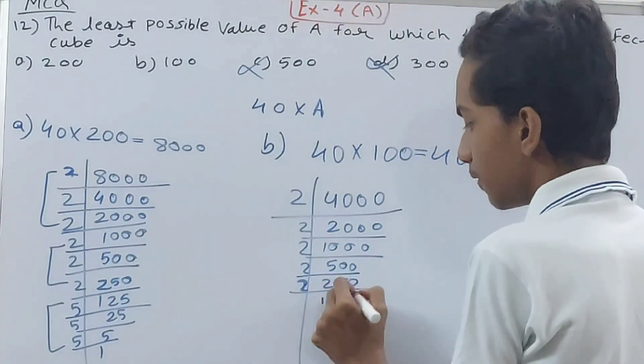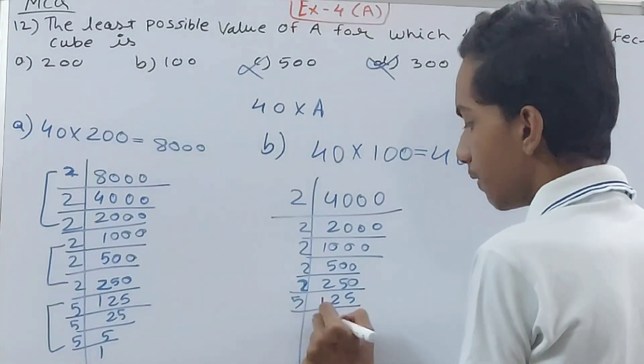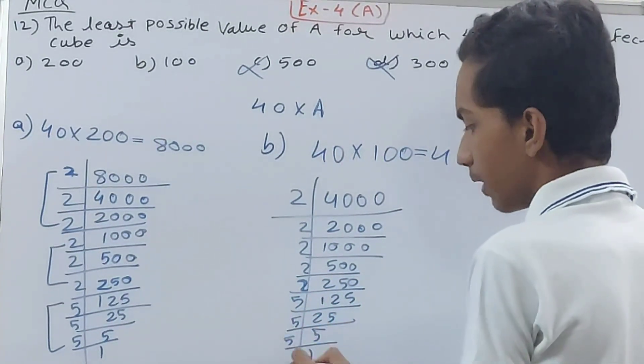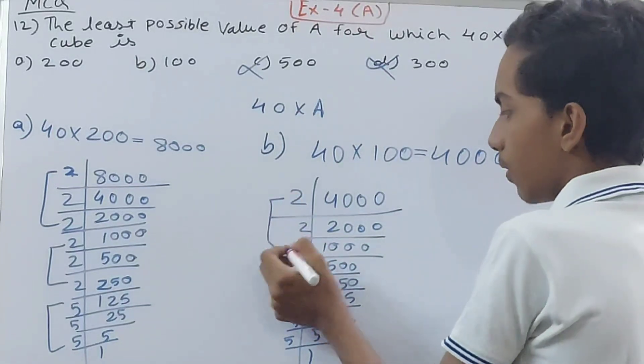2, 125 here. 5 again, 25. 5 again, 5 and 5 and 1. Can I make all the triplets? No, this 2, this triplet is incomplete.